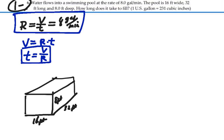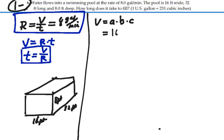And the total volume, as we know for such a parallelogram, would be equal to side A times side B times side C. So this would be equal to 16 feet times 32 feet times 8 feet.